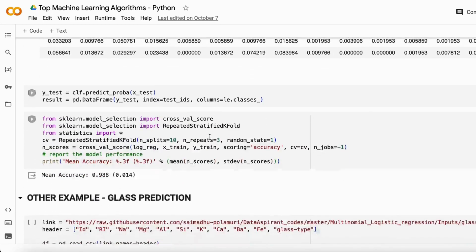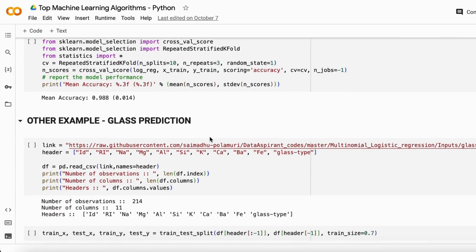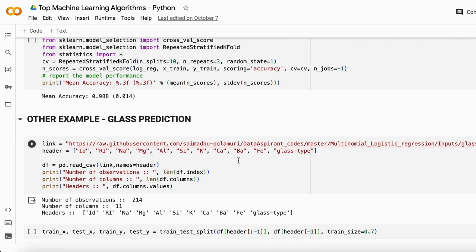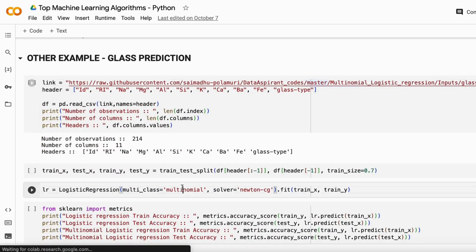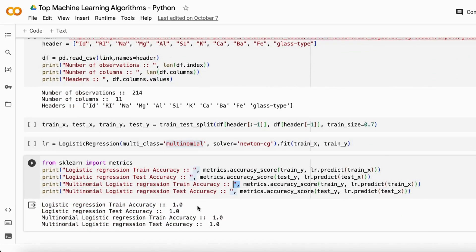Let me give you another example. We want to predict the glass type. We have this data and these are the data headers, and you want to predict what kind of class it is. You do the same steps as in the above project. This is how you create the multinomial logistic regression model. When you get the accuracy, it gives us 100% accuracy.